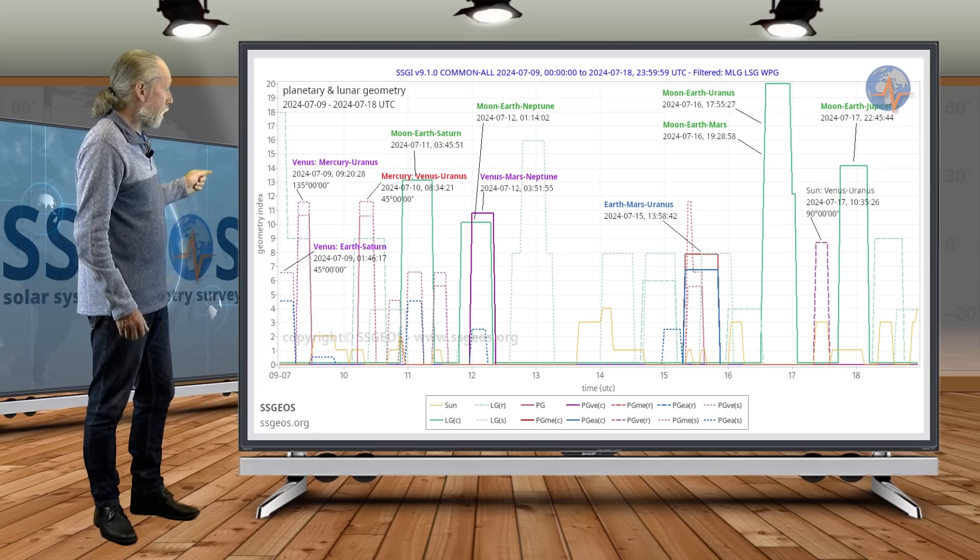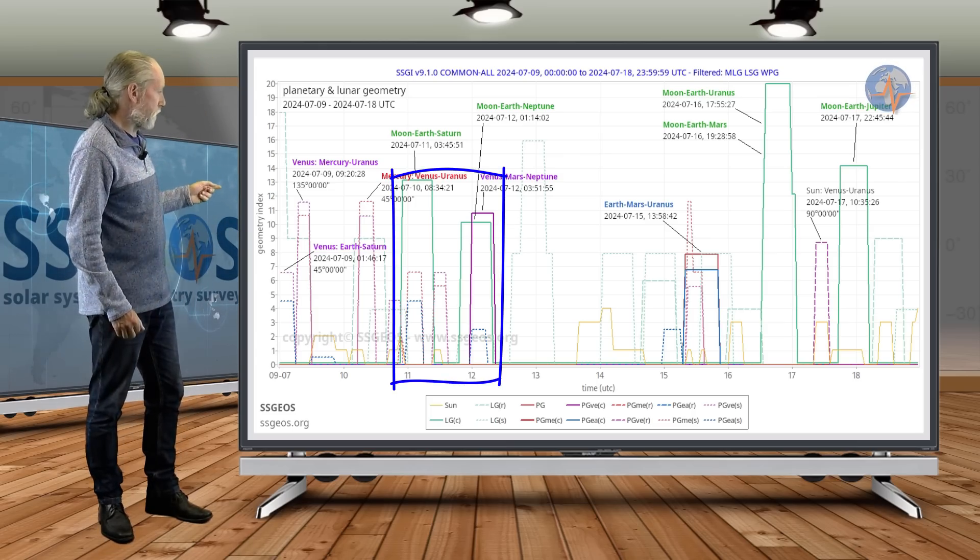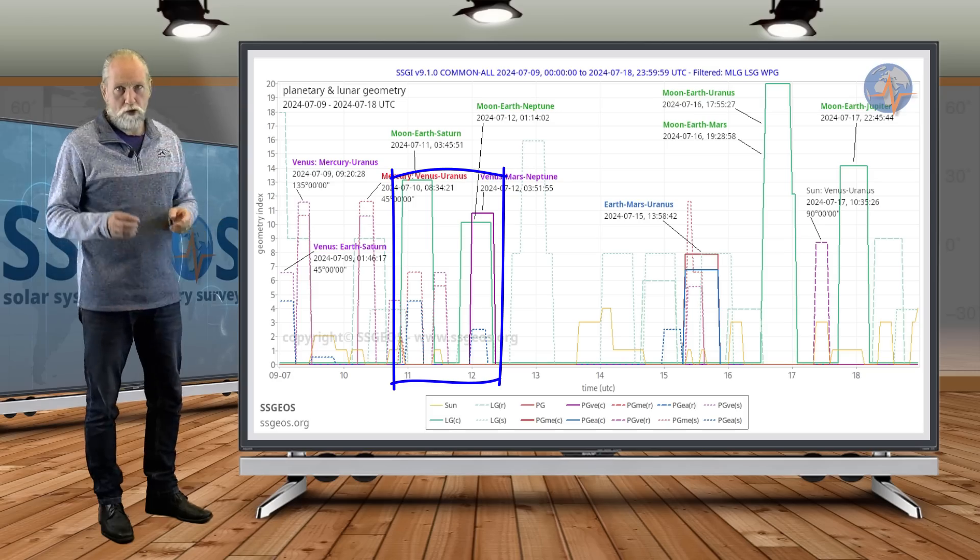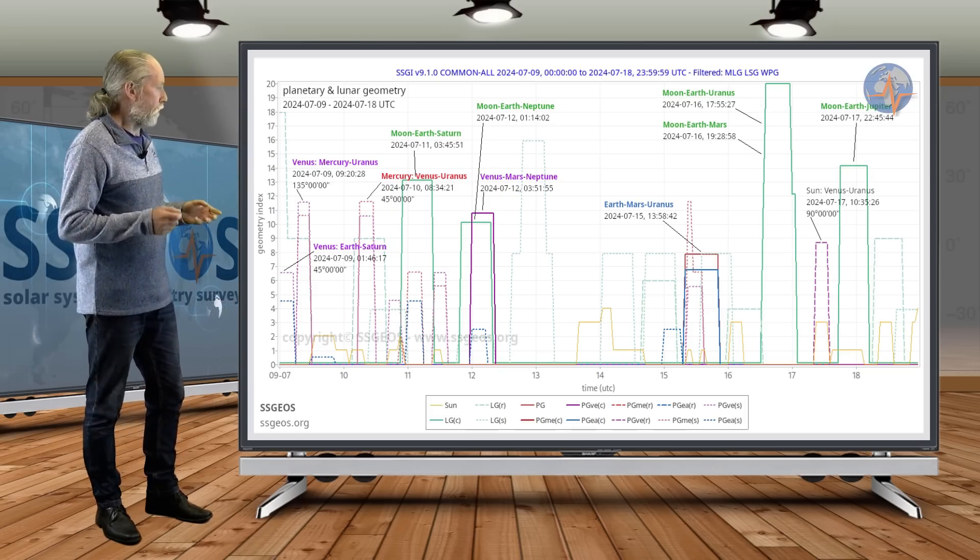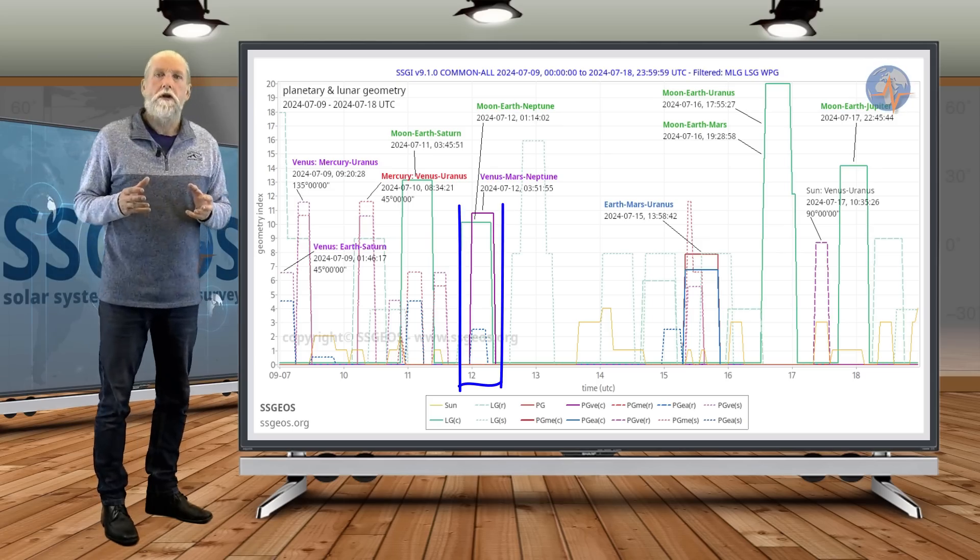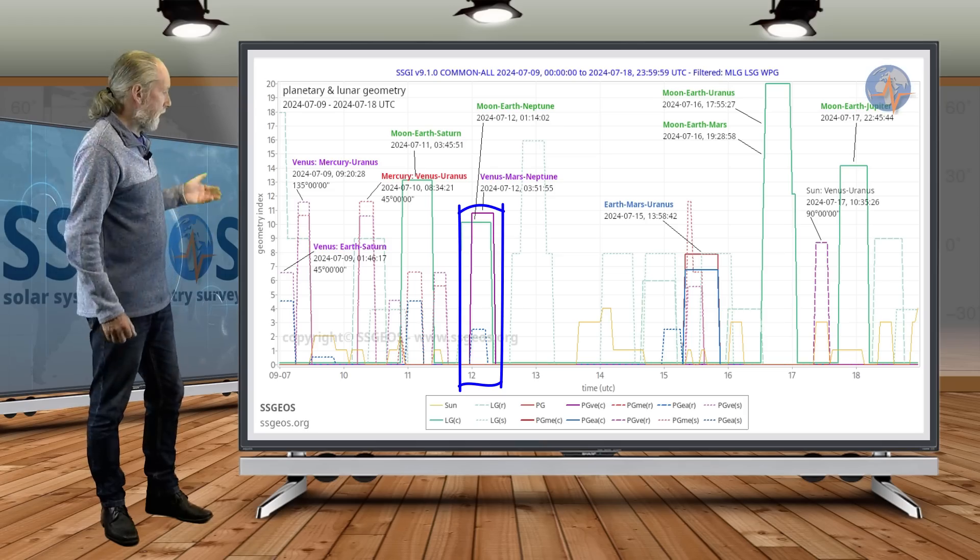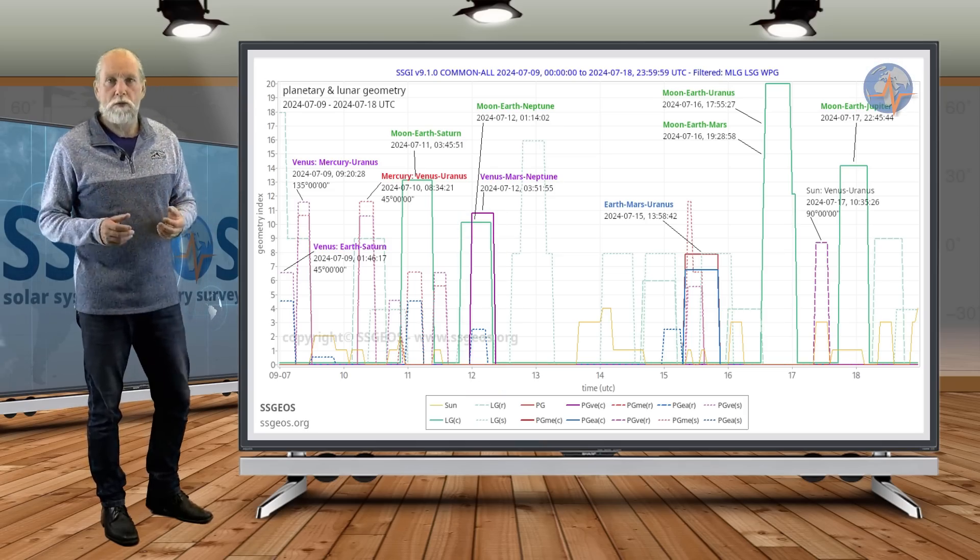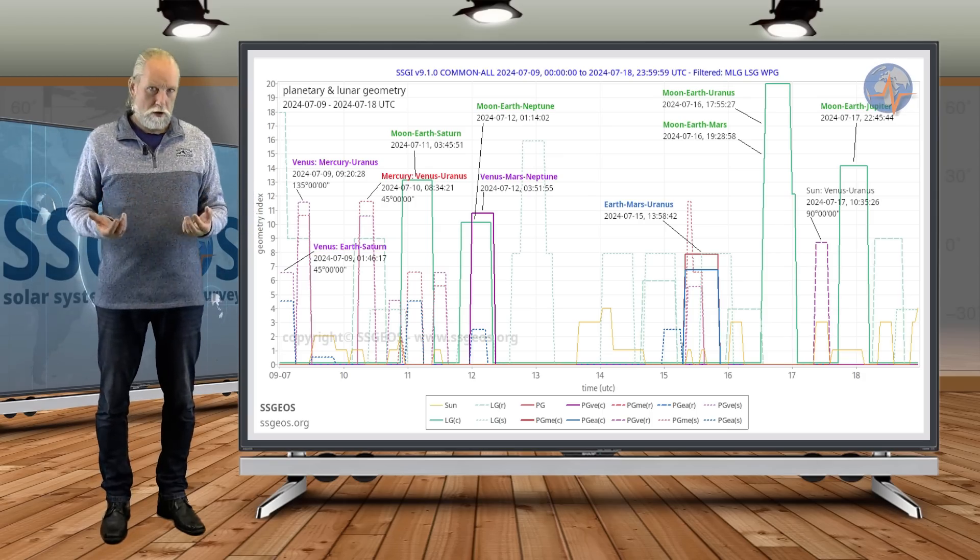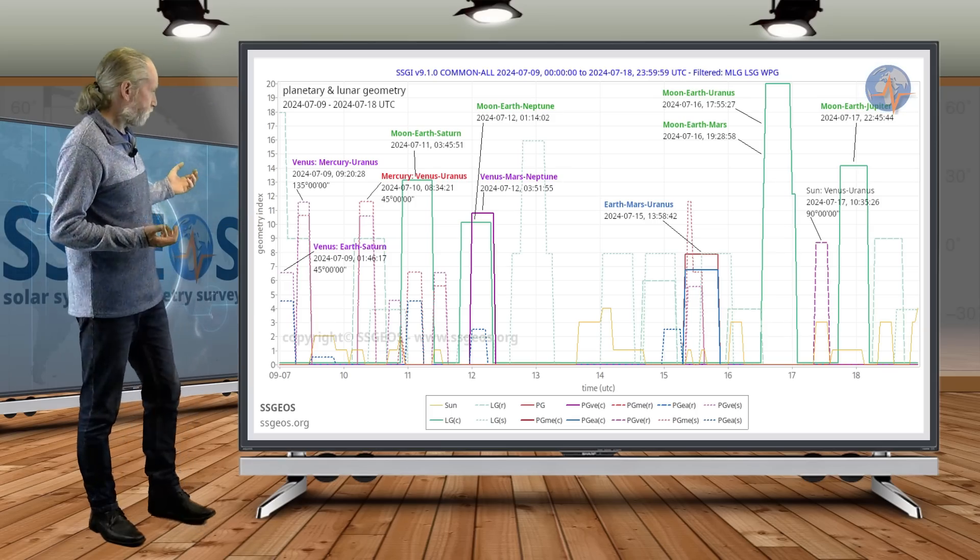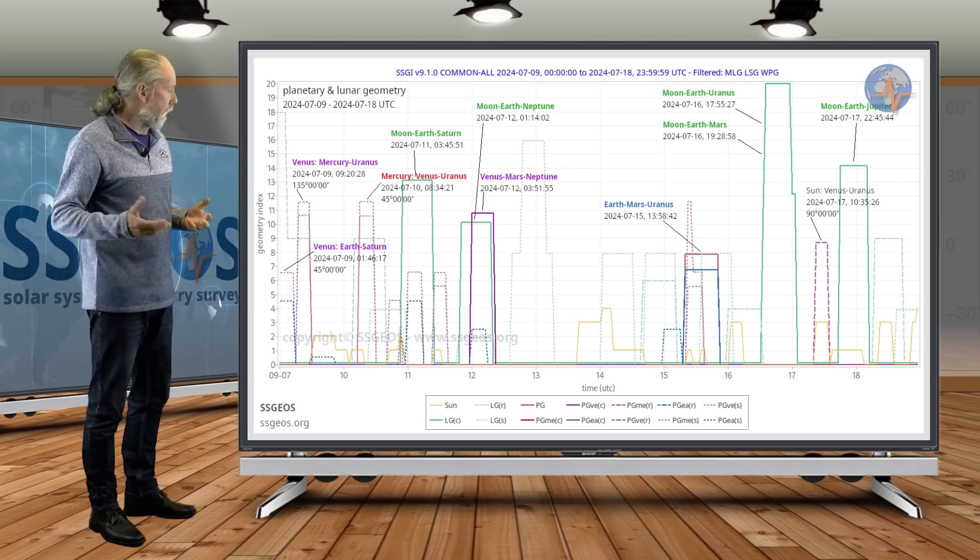And tomorrow, we have lunar geometry coming up, that's with Saturn and also with Neptune. The lunar geometry, that's a conjunction or actually opposition with Neptune, that converges with Venus, Mars and Neptune in a conjunction. There can be a seismic response there around the 13th. It could be a cluster of stronger earthquakes approaching magnitude 6, or a single larger earthquake.